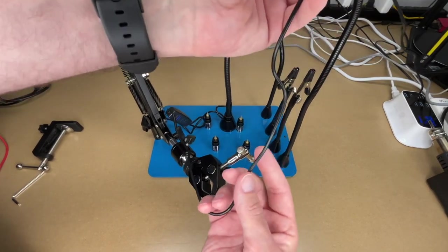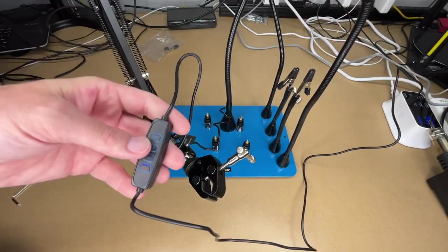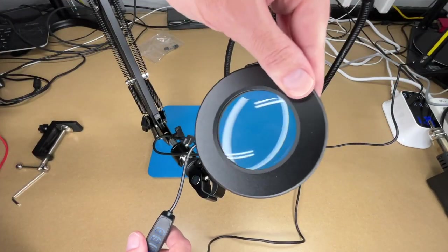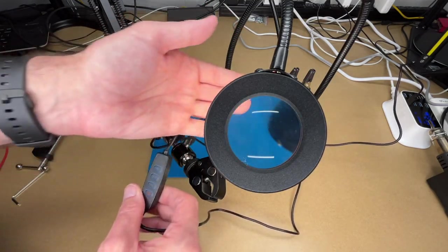If you have a toolbox, you could always magnet it to the toolbox. So here's the control. Here's our magnifier light. So we can turn it on. So now it's on.